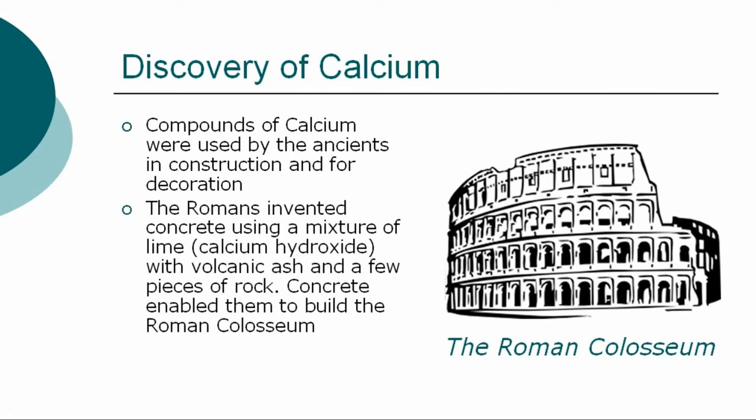The ancient Romans discovered concrete by combining a mixture of lime, calcium hydroxide, with volcanic ash and a few pieces of rock. Without concrete, fabulous Roman buildings such as the Pantheon and the Colosseum could not have been built.